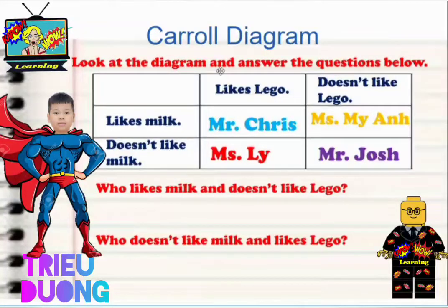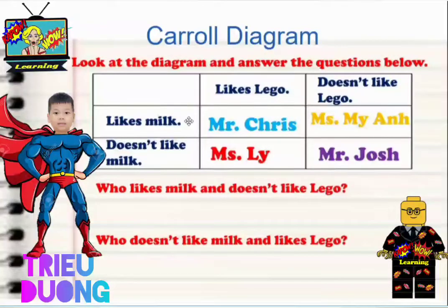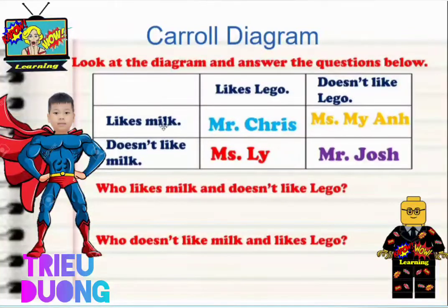So it says, look at the diagram and answer the questions below. Now, this is a Carroll Diagram. Carroll Diagrams are information which should be easy and quick to find answers to. So it says: likes Lego, people who don't like Lego, people who like milk, and people who don't like milk.